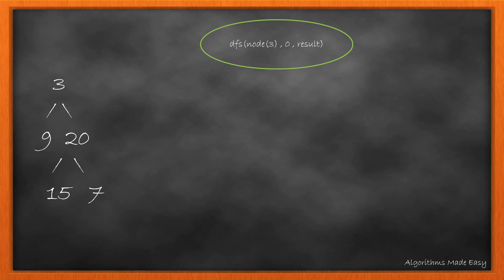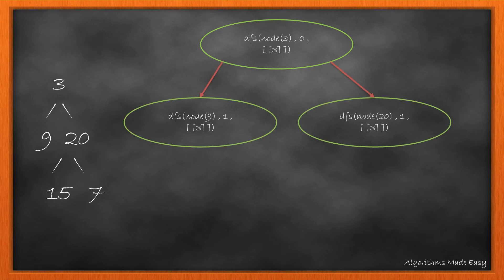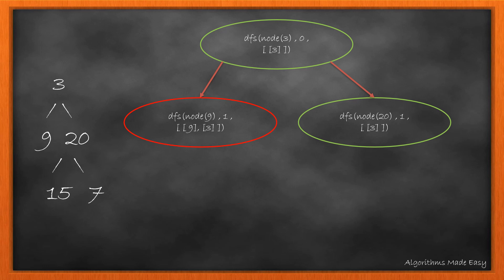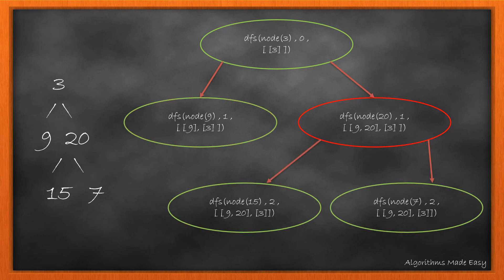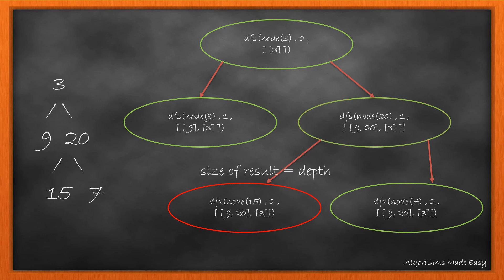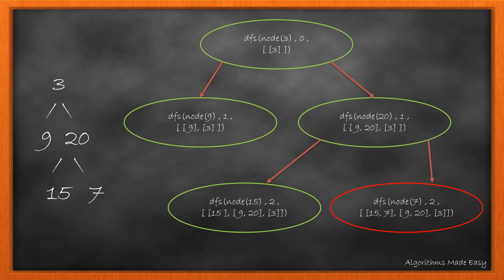We start calling the function on root with depth as 0. As the result list is initially empty, the condition of size equal to depth is satisfied and we add a new list at the starting index of result. We then add the node value into the list and call the method on left and right child. Again size and depth are equal, so we add a new list at index 0, add 9 at the first list, and as there is no child of 9 we move to the other method. The result is updated and we add 20 into the list and call the method for both its children. Again size equals depth, so we add a new list, add 15, and as it is a leaf node we move on. We then add 7, completing our method calls, and return result.